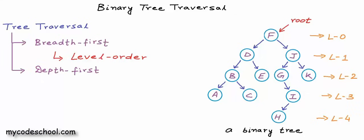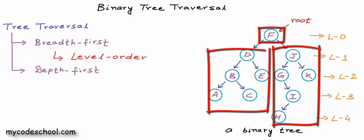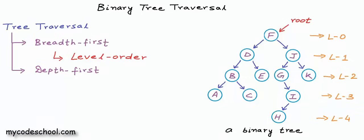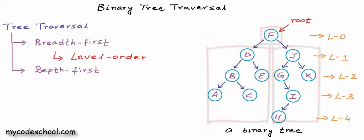For example, we can first visit the right subtree, then the root, and then the left subtree. Or we can first visit the root, then the left subtree, and then the right subtree. The relative order can be different, but the core idea in depth-first strategy is that visiting a child means visiting the complete subtree in that path. Remember, visiting a node is reading, processing, or printing the data in that node.